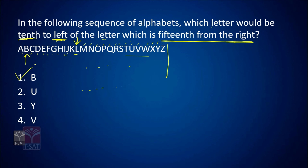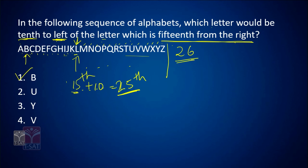Instead of counting, a shortcut: the 15th from the right means we need to move 10 more to the left, so we want the 25th position from the right. There are 26 alphabets total. The 26th from the right is A, and the 25th is B. So you can easily say B without counting every alphabet individually.